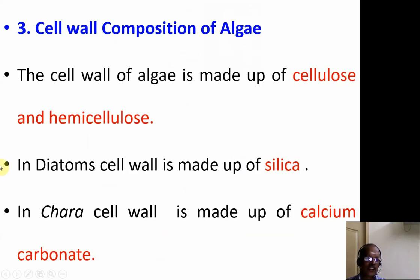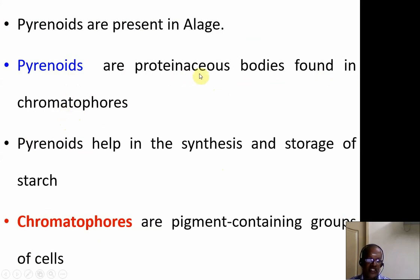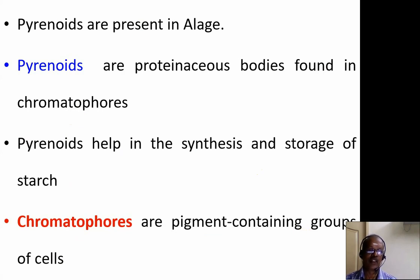The cell wall of algae is generally made up of cellulose and hemicellulose. In diatoms, the cell wall is made up of silica, and in Chara, the cell wall is made up of calcium carbonate. Pyrenoids are also present in algae. Pyrenoids are proteinaceous bodies found in chromatophores, and they help in the synthesis and storage of starch. Chromatophores are pigment-containing cells that contain algal pigments.